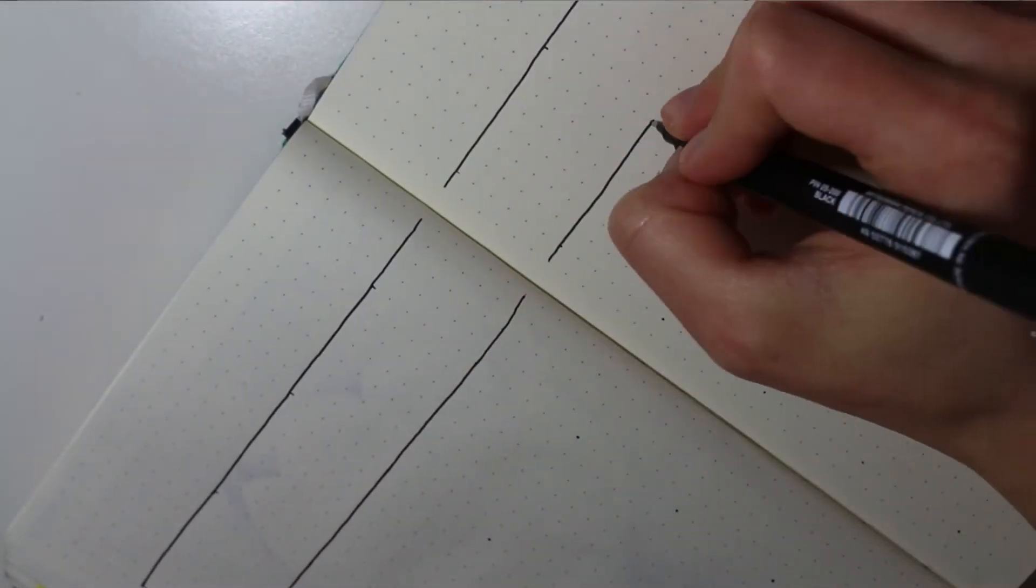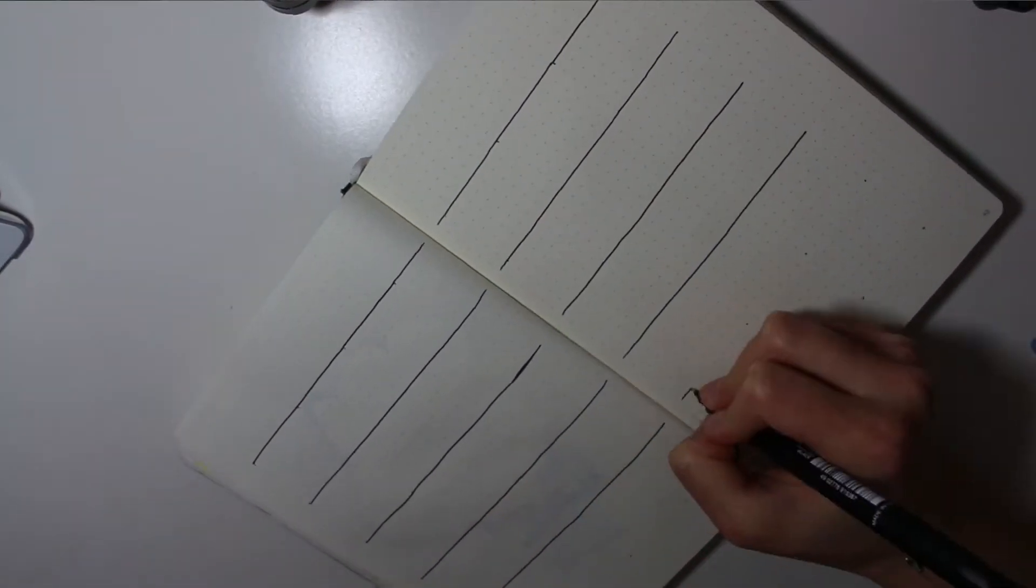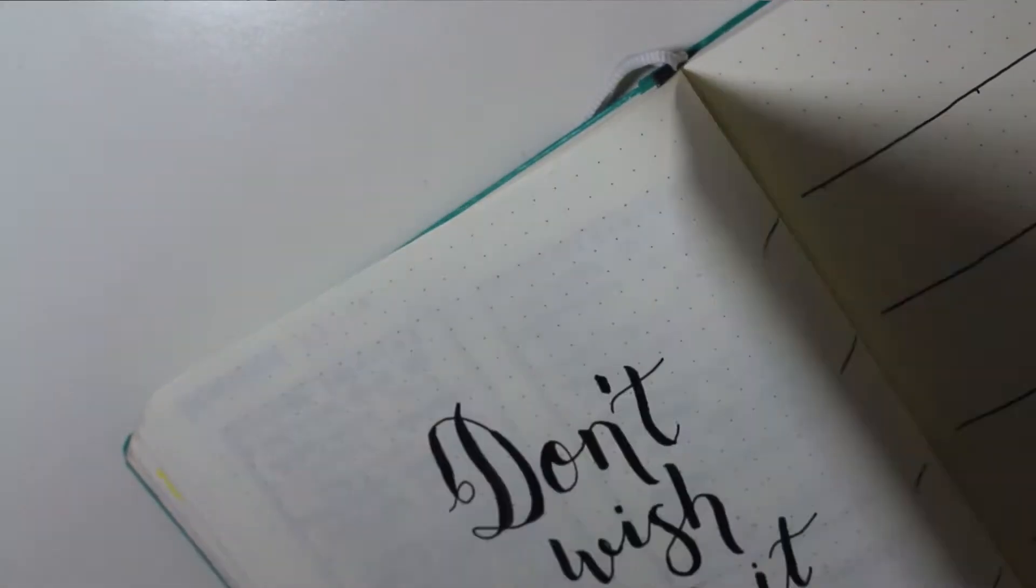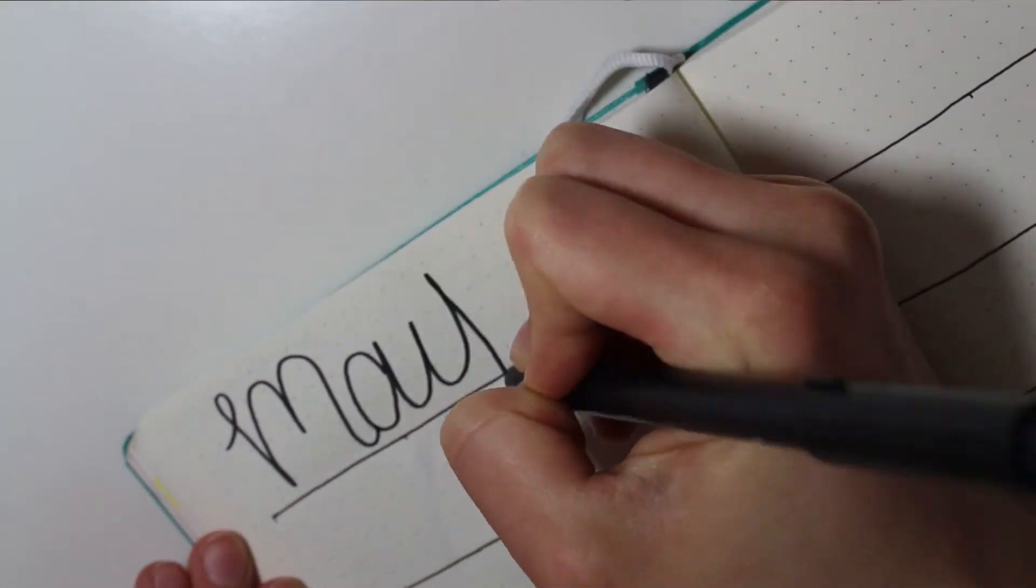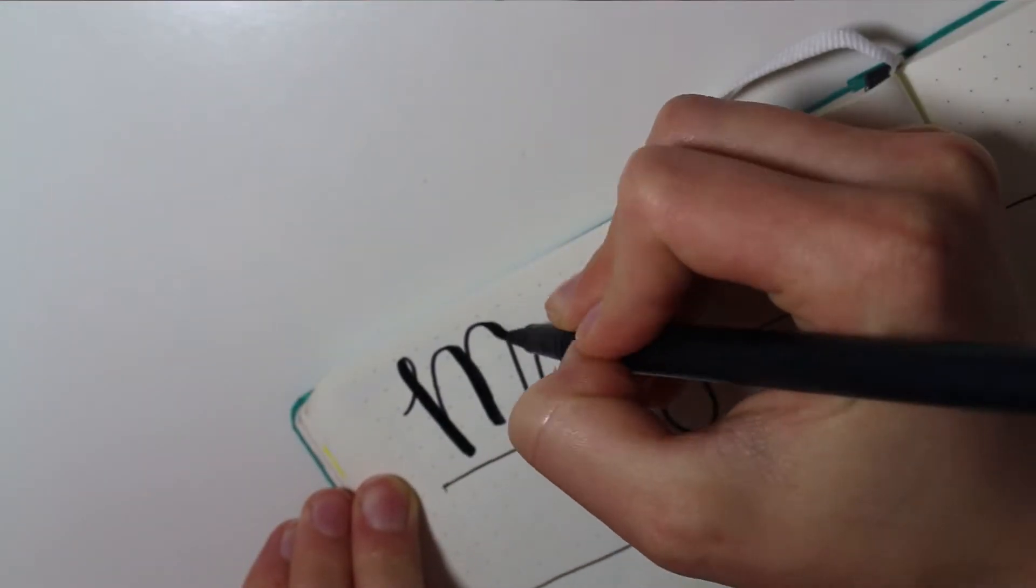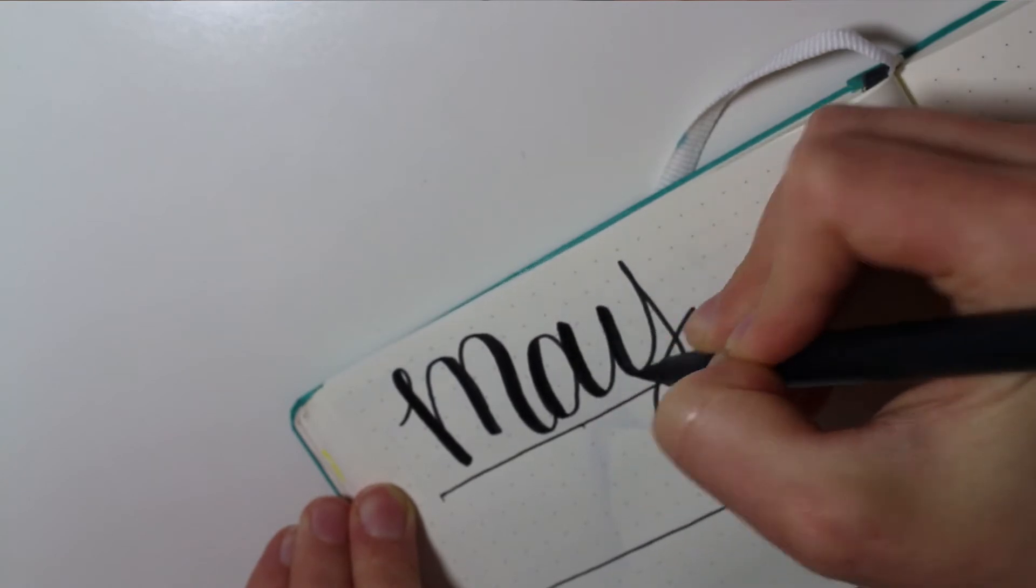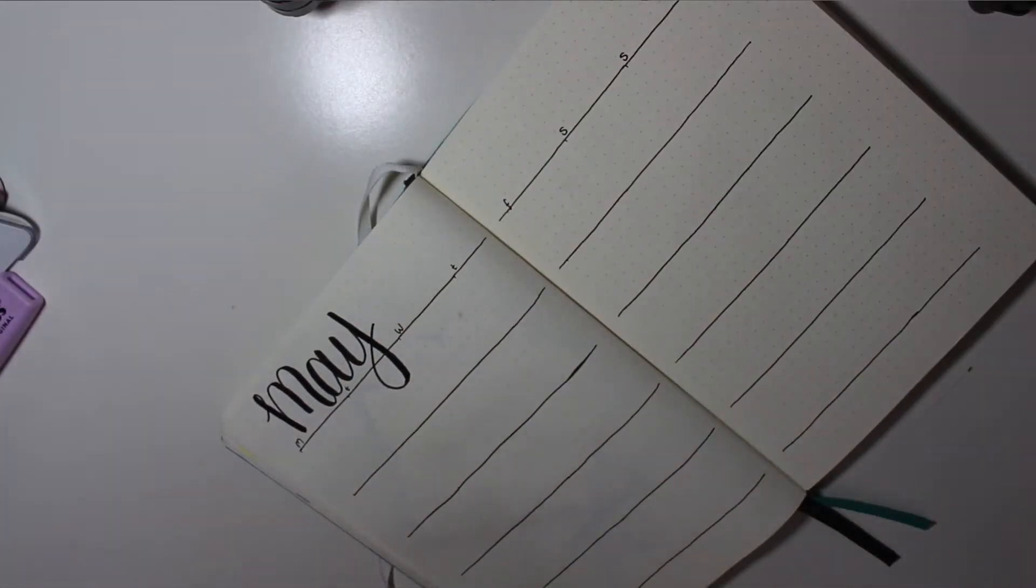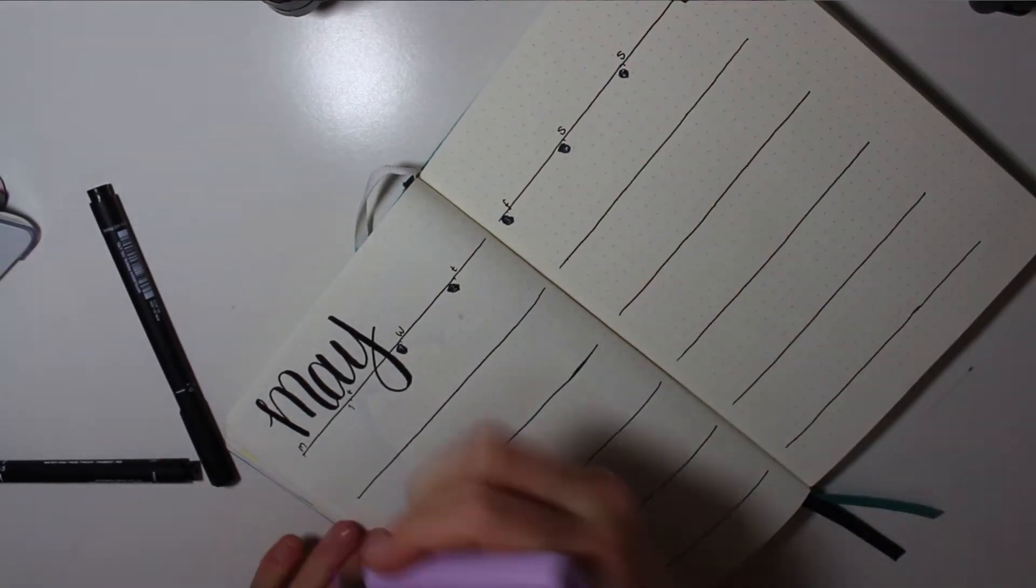And now moving on to my monthly page, I'm using a fine liner in 0.5 just to do the lines and they are six by seven, the boxes. And then I'm writing May and then just filling in all of the days.